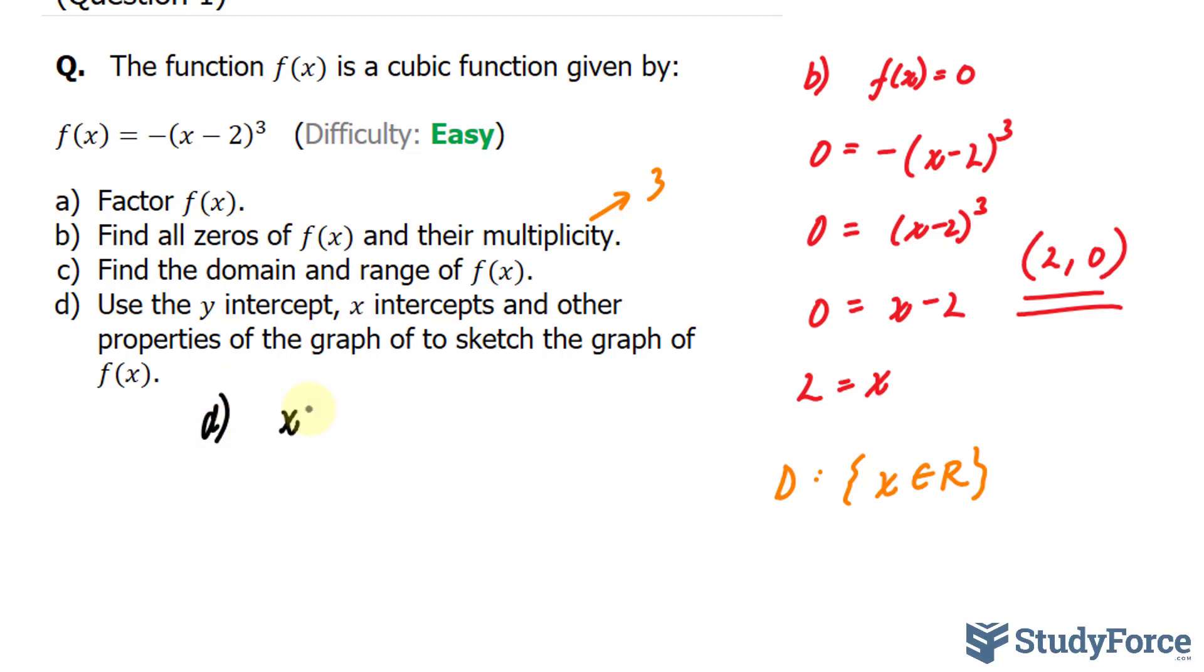For question D, I'll set x equal to 0. If I set this equal to 0, I end up with negative 2 raised to the power of 3, that's negative 8. Then multiply that by a factor of negative 1, we end up with positive 8. So we have a point at (0, 8). That is our y-intercept.